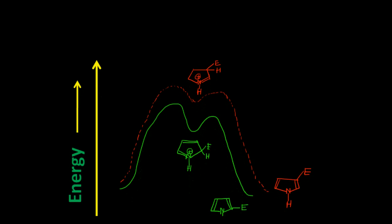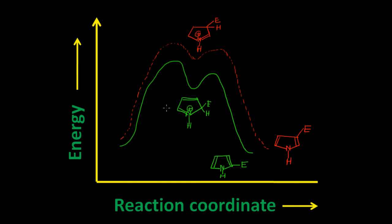This can be confirmed with the help of a potential energy diagram of this electrophilic substitution reaction. On the x-axis we have the reaction coordinate and on the y-axis we have energy. The starting material is pyrrole. When the electrophilic substitution occurs at position 2, the green line shows it has slightly lower energy as compared to when electrophilic substitution occurs at position 3. This figure also indicates that position 2 is more predominant in the case of 5-membered heterocyclic compounds.